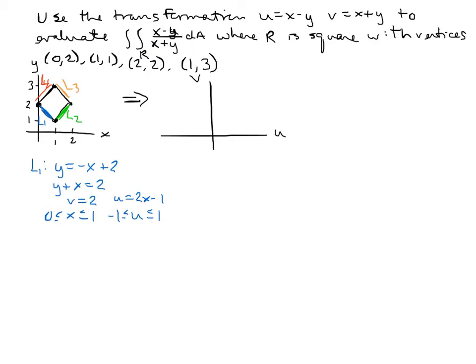Wait — something is not quite right. For u, y is -x + 2, so u = x - (-x + 2) = 2x - 2. When x = 0, u = -2; when x = 1, u = 0. So line 1 in the new graph is the line v = 2, with u going from -2 to 0. Plotting: v = 2, u from -2 to 0 — that's the new line 1 in the uv-plane.